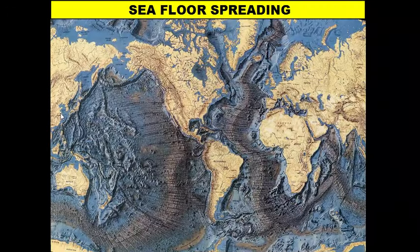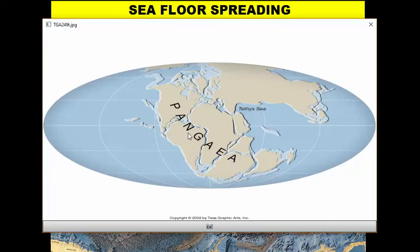Hi there, everyone. Welcome to our lesson on seafloor spreading. In our last lesson, we discussed Alfred Wegener's theory of continental drift. Alfred Wegener stated, based on evidence that he saw and used, that all of our continents and landmasses were connected as one big supercontinent called Pangea — a name he coined because it means 'all Earth.'